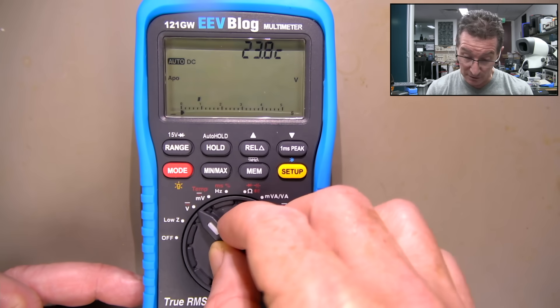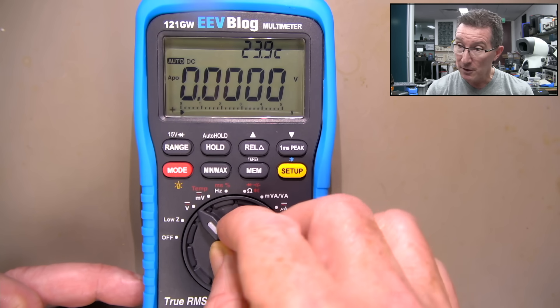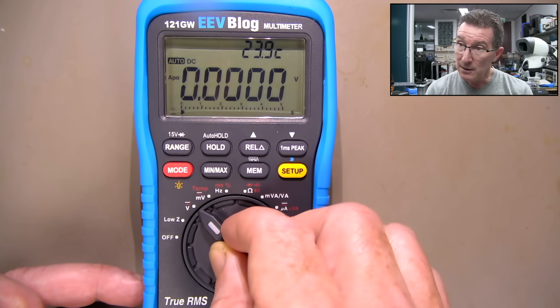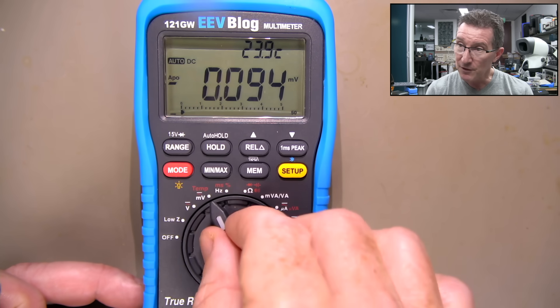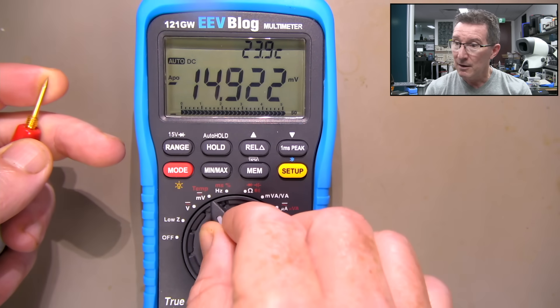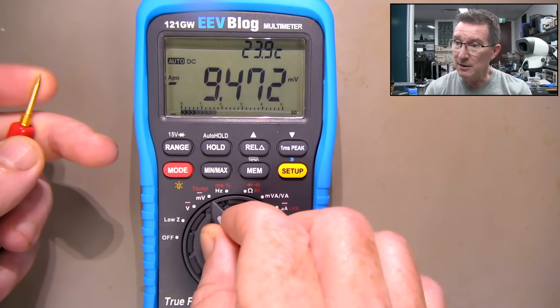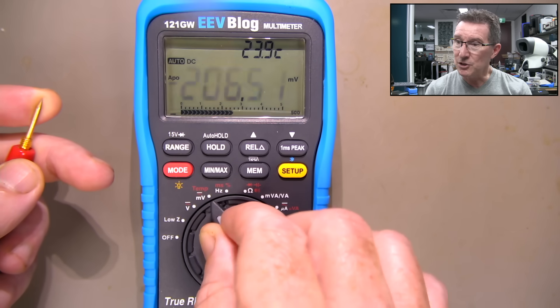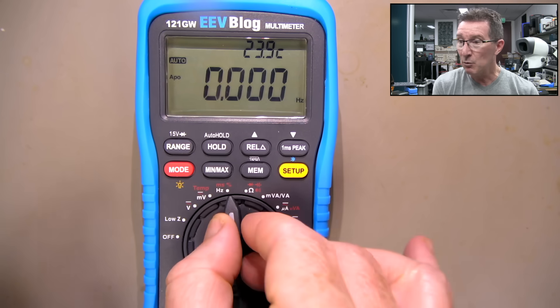The range switch is really solid. There's no loosey-goosey in the range switch there at all. So if I go over to millivolts and start fiddling around with it, wiggle, wiggle, wiggle in the range switch a bit. Yeah, it works fine.